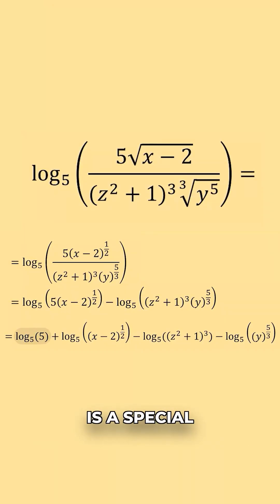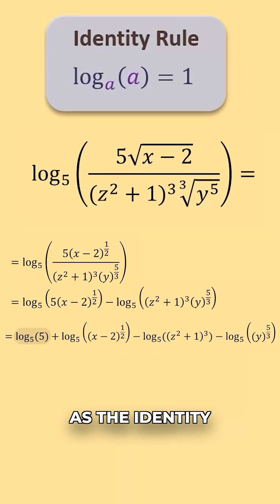Next, log base 5 of 5 is a special case of the inverse rule from the last problem. This case is usually referred to as the identity rule. Essentially log base a of itself is equal to 1. Similarly, log base 5 of 5 would equal 1, and so we can replace it with 1.